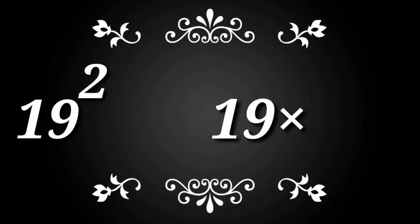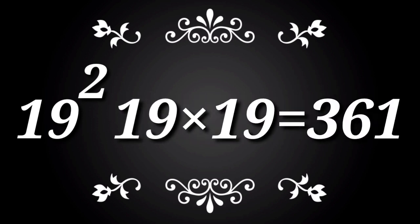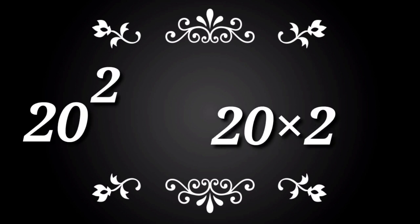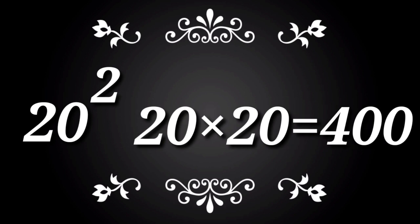19 square. 19 into 19 is equal to 361. 20 square. 20 into 20 is equal to 400.